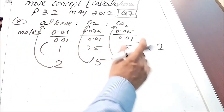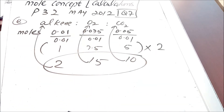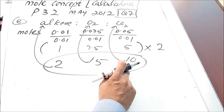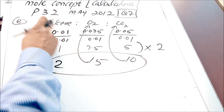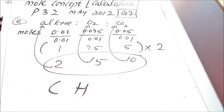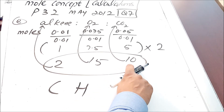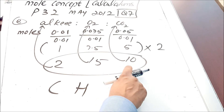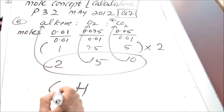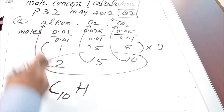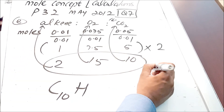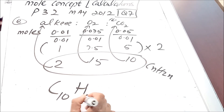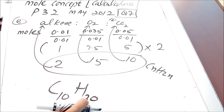The next part of the question says: use this ratio to figure out the formula of the alkene. The trick is that the moles of CO₂ reflects the number of carbon atoms present. Alkenes are made of carbon and hydrogen and have the general formula CₙH₂ₙ, meaning hydrogen is twice that of carbon. Since there are 10 moles of CO₂, there must be 10 carbons, and therefore 20 hydrogens — giving the alkene formula C₁₀H₂₀.